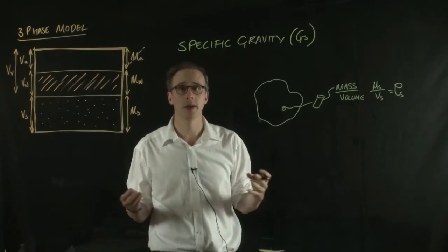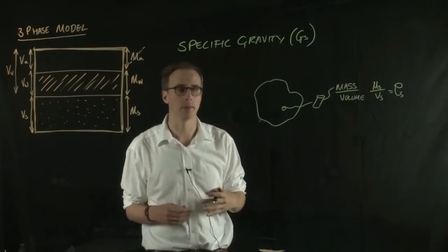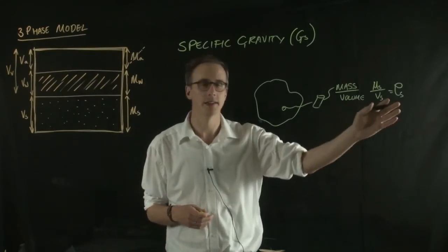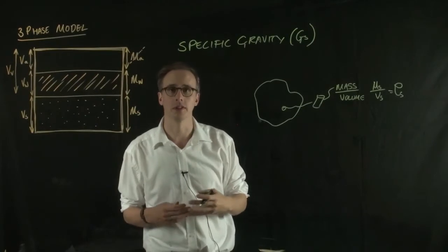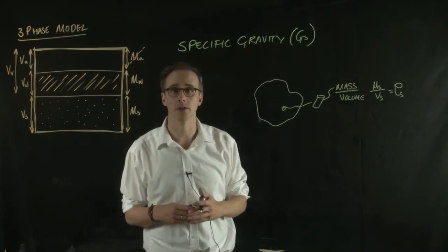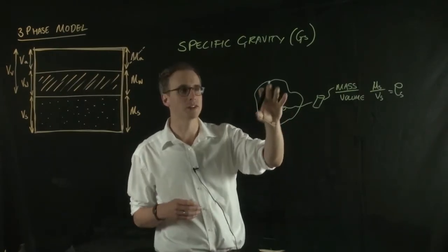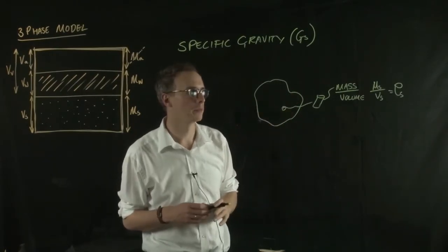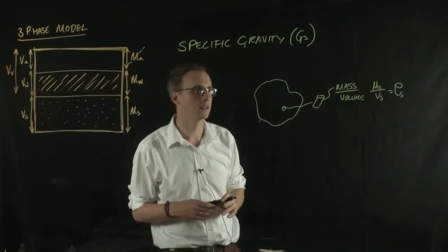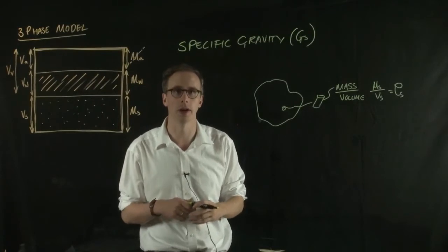The soil is made up of a whole range of different minerals and organic matter that all have a range of densities. Some minerals are denser than others and organic matter is less dense than those usually. This is really just the average solid density across all of these minerals and organic matter.